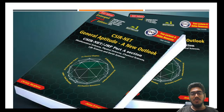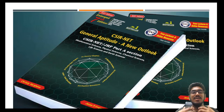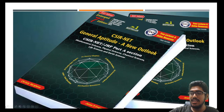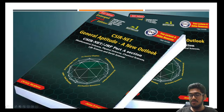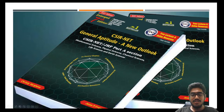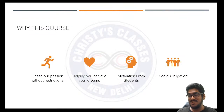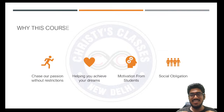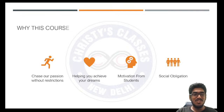Before we begin, whatever we are teaching here has been explained concisely with as many examples as possible in our book 'CSIR NET General Aptitude: A New Outlook,' written by Christie Sir and me — now in its seventh edition. If you have the book, refer to it alongside the lecture; if not, grab a copy from the link in the chat box. We decided at the start of this course to spend the first five minutes on why we're doing this — we shouldn't forget what motivated us or what drives us. It is to chase our passion.